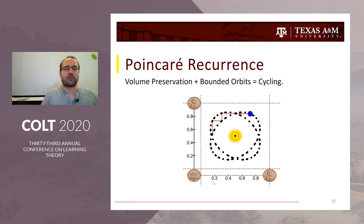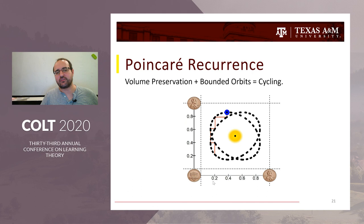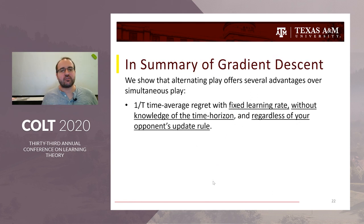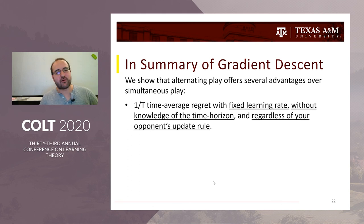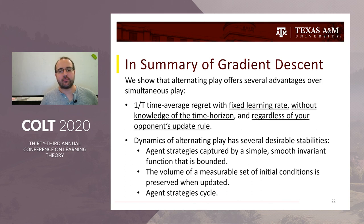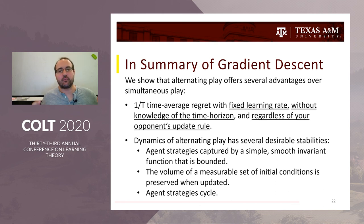When you put the two stability conditions together — bounded orbits along with volume preservation — you get exact cycles, which makes the behavior predictable over time. Altogether, gradient descent with alternating play establishes several benefits over simultaneous play: much stronger regret guarantees with fixed learning rates so we can stay aggressive to new information, the result doesn't depend on the time horizon, and it works regardless of the opponent's update rule.